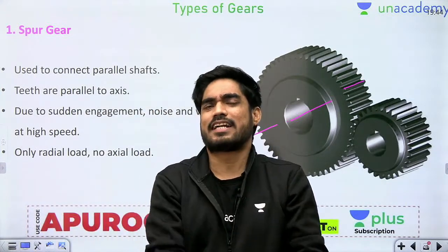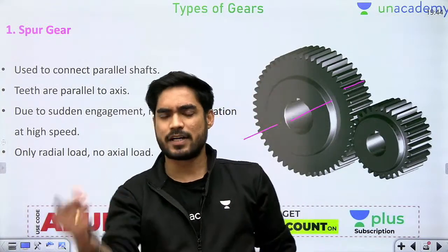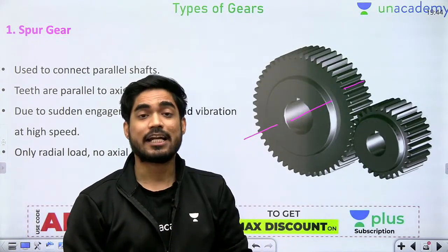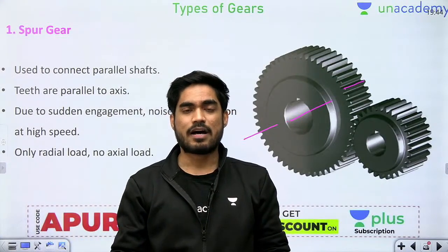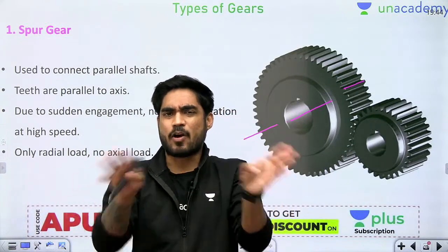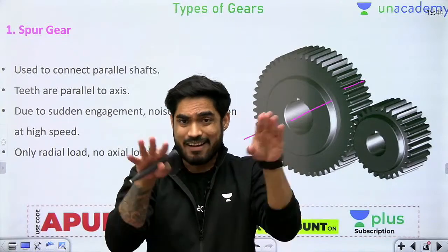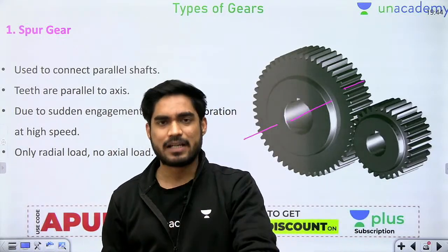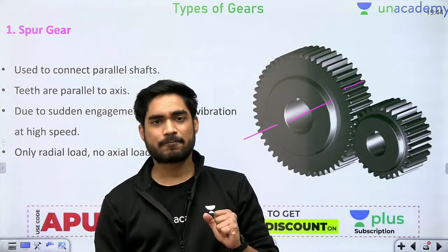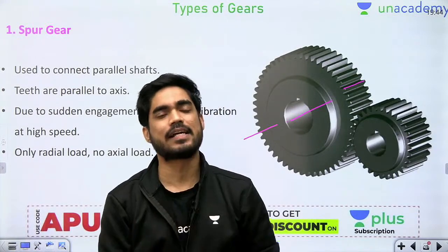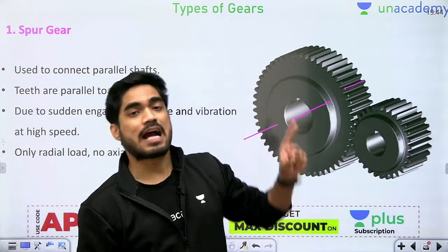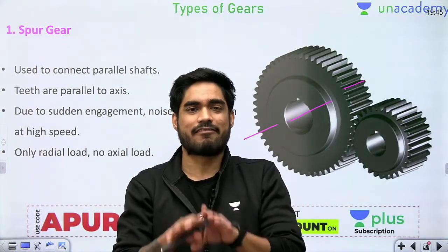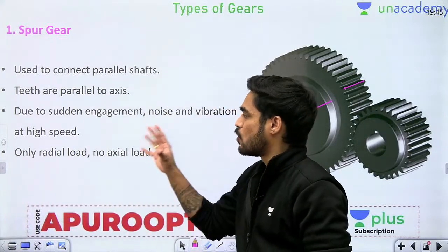Sudden engagement causes noise, vibration, and wear and tear. Because the teeth of spur gear come fully into contact at once, there will be a cut-cut noise at high speed and the teeth will wear off rapidly. That is why spur gears are used only for low-speed applications — at very high speed there will be excessive noise, wear, and vibration. Another very important point, on which GATE questions have been based: in shafts there are two types of loads — radial load and axial load. The load along the length of shaft is axial; perpendicular to the length is radial.